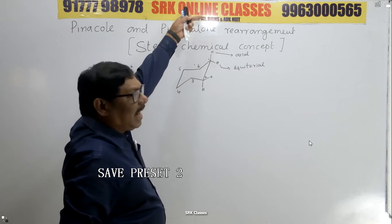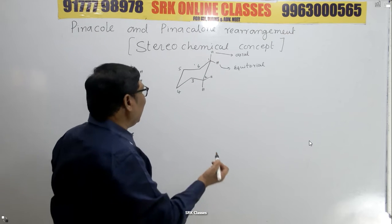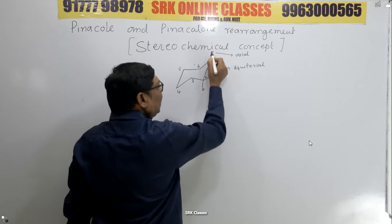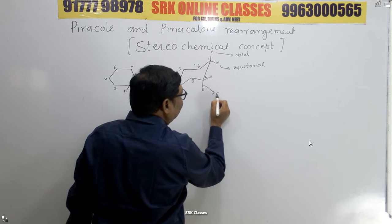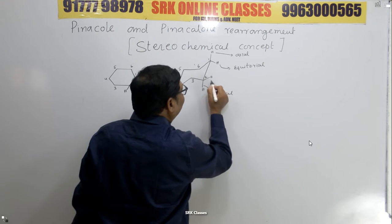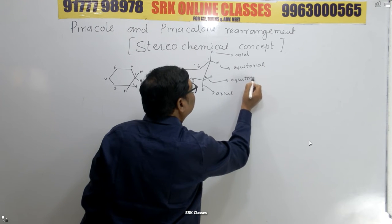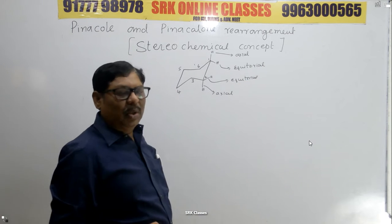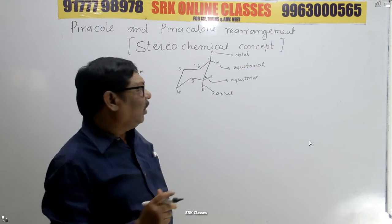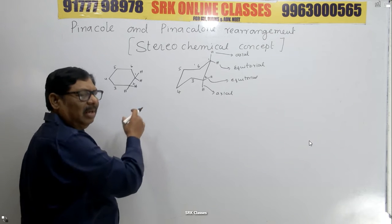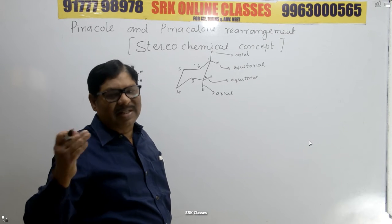Above the plane is called axial; along the plane is called equatorial. In the same manner, if one position is axial above, the adjacent carbon below becomes axial as well. So each carbon has two hydrogens — one is axial and the second one is equatorial.